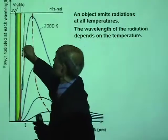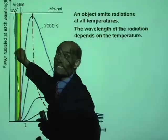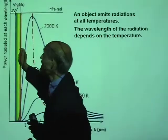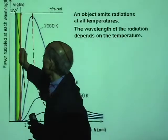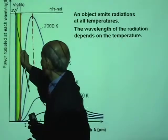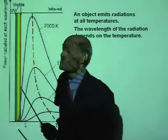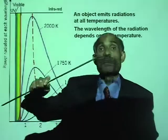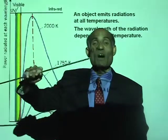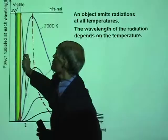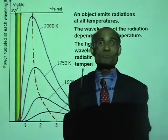What is the temperature required for visible light? Visible light is made up of all these beautiful colors, and the temperature for visible light to be emitted is above 4,000 degrees Celsius. Only above 4,000 degrees Celsius will you start seeing visible light.